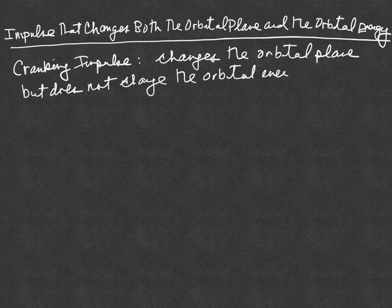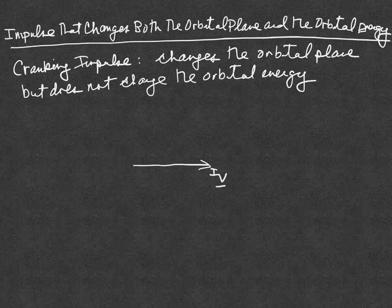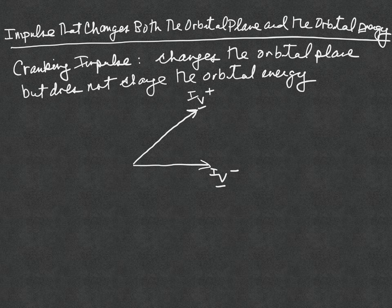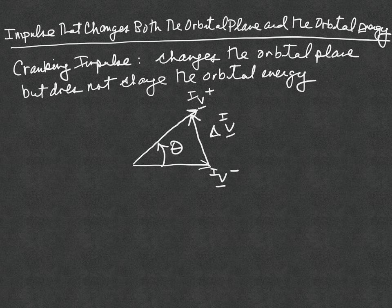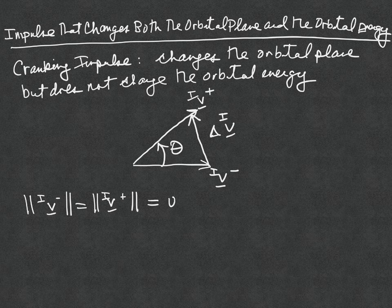The reason the orbital energy is not changed is because for a cranking impulse, the magnitude of the inertial velocity before and after the impulse is the same — the inertial speed before and after the impulse is applied is the same. The angle was referred to as the cranking angle. So we have that |Vi⁻| equals |Vi⁺|, which was just referred to as V for a cranking impulse.